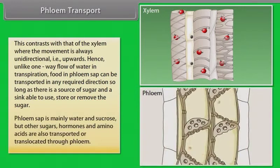Phloem sap is mainly water and sucrose, but other sugars, hormones, and amino acids are also transported or translocated through phloem.